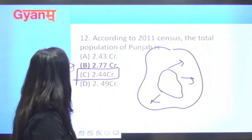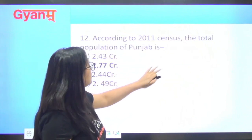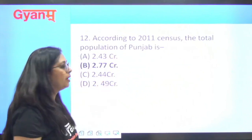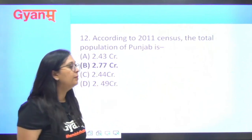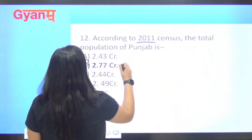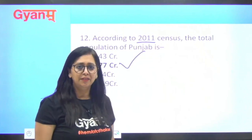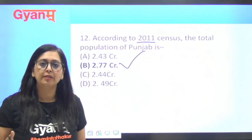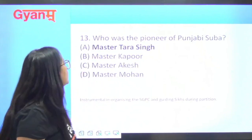Next question: according to the 2011 census, what is the total population of Punjab? The total population of Punjab according to the 2011 census is 2.77 crore.